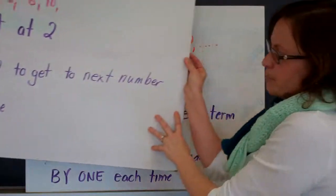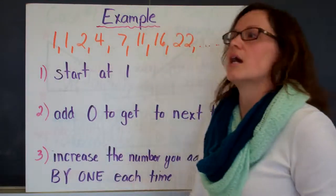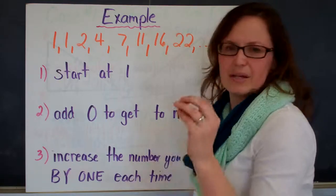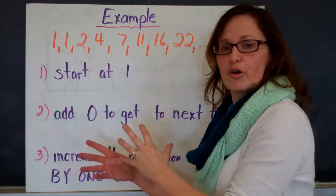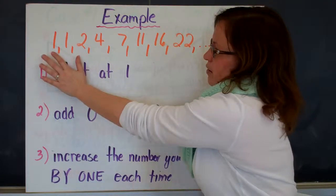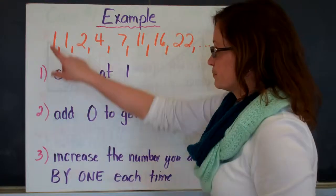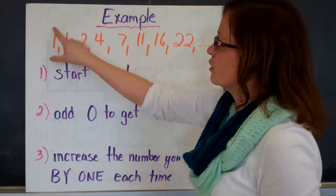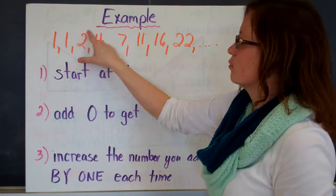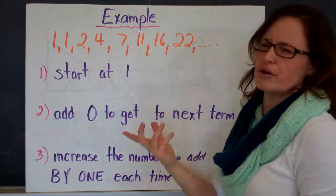I'm going to give you another example where step 3 is not just 'continue' — where the second step isn't just to add the same thing over and over again. So let's talk about this pattern: 1, 1, 2, 4, 7, 11, 16, 22. If we do our little arrows, we know we went up by 0, then up by 1, up by 2, up by 3, 4, 5, 6. So you can understand the pattern.